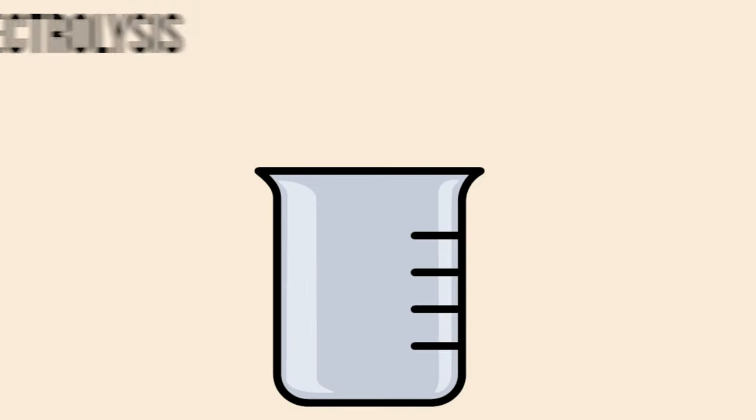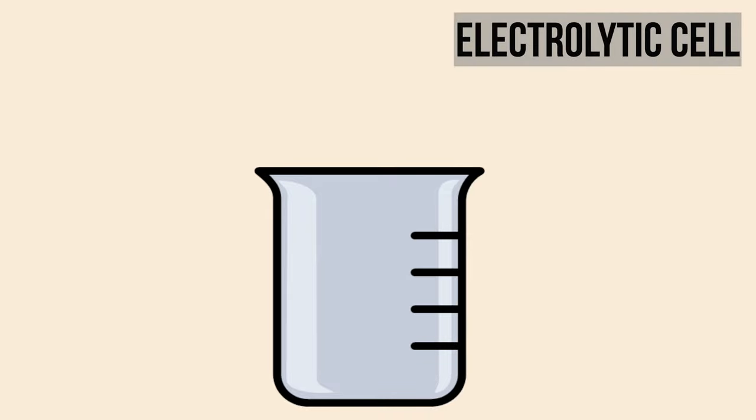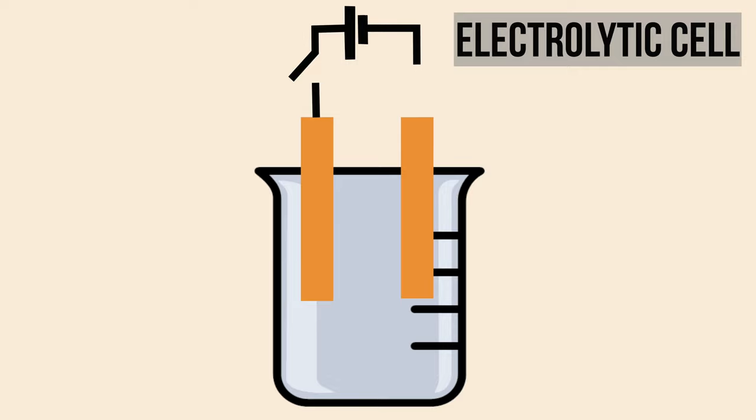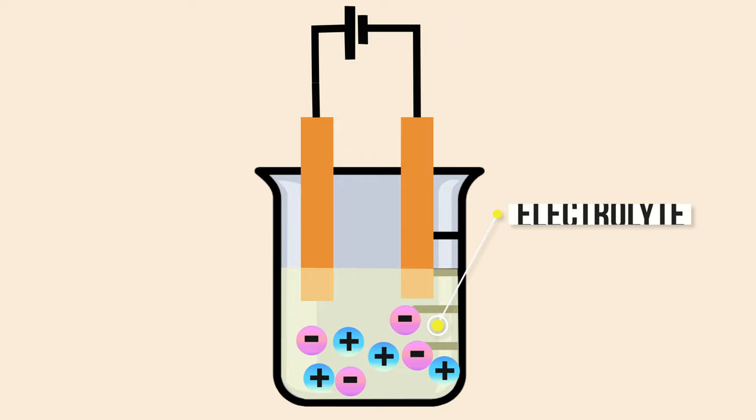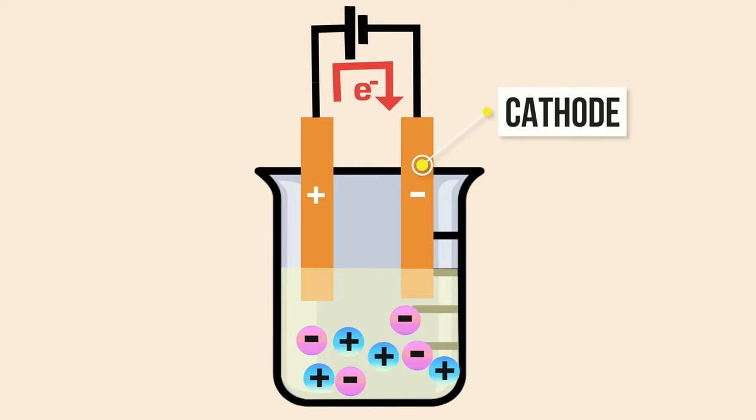Electrolysis is carried out in a vessel named electrolytic cell, containing two electrodes connected to a direct current source and dipped into a solution containing positively and negatively charged ions called an electrolyte. Once the power is on, electrons start flowing. It makes one electrode negatively charged, otherwise known as a cathode, the other electrode positively charged, otherwise known as an anode.